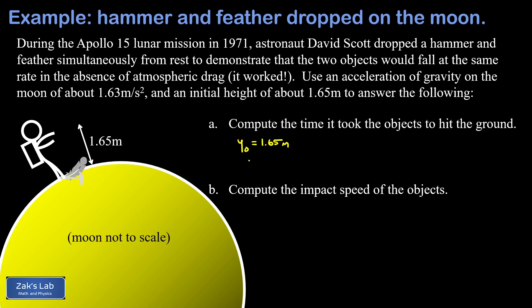That means the acceleration induced by gravity near the surface of the moon should be written as negative 1.63 meters per second squared simply because it points downward.